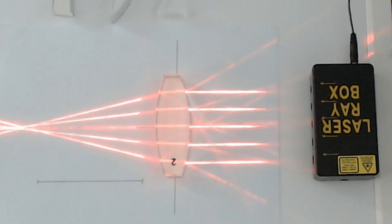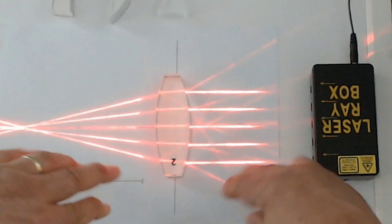You can start by looking up what thin lens actually means. It's a definition that you should know. And it will explain the differences here.